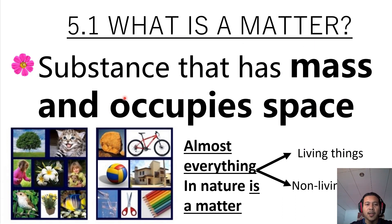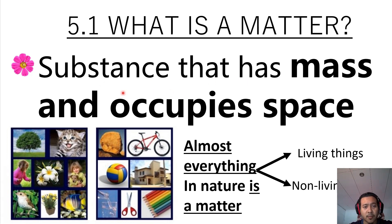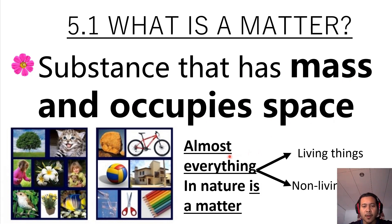Alright, what is matter? Matter is a substance that has mass and occupies space. So apa maksud jirim? Matter dalam masa ini ialah jirim. Matter ni ialah substance that has mass — bahan-bahan yang mempunyai jisim — and occupies space, di mana ia memenuhi ruang. So almost everything in nature is a matter.